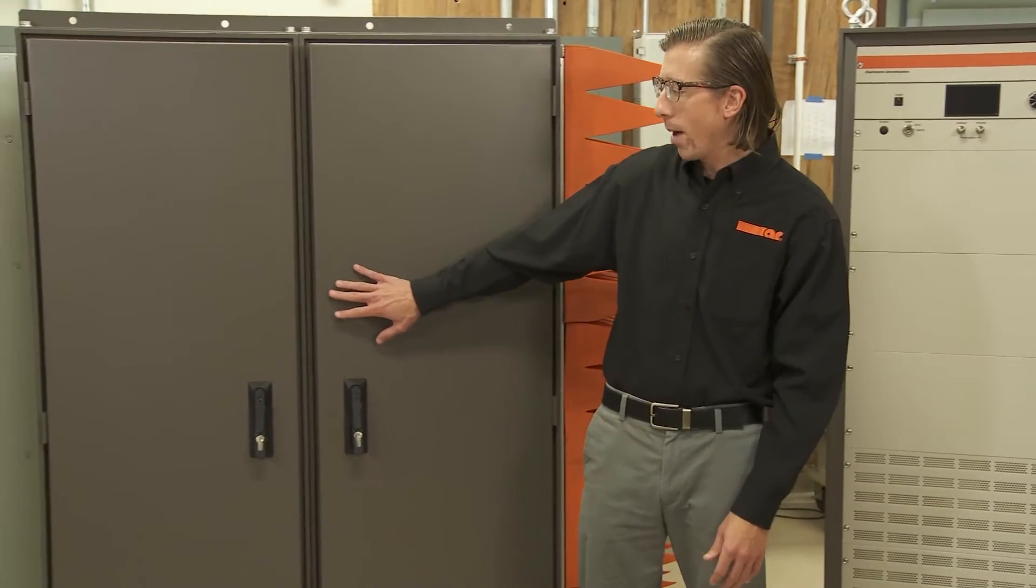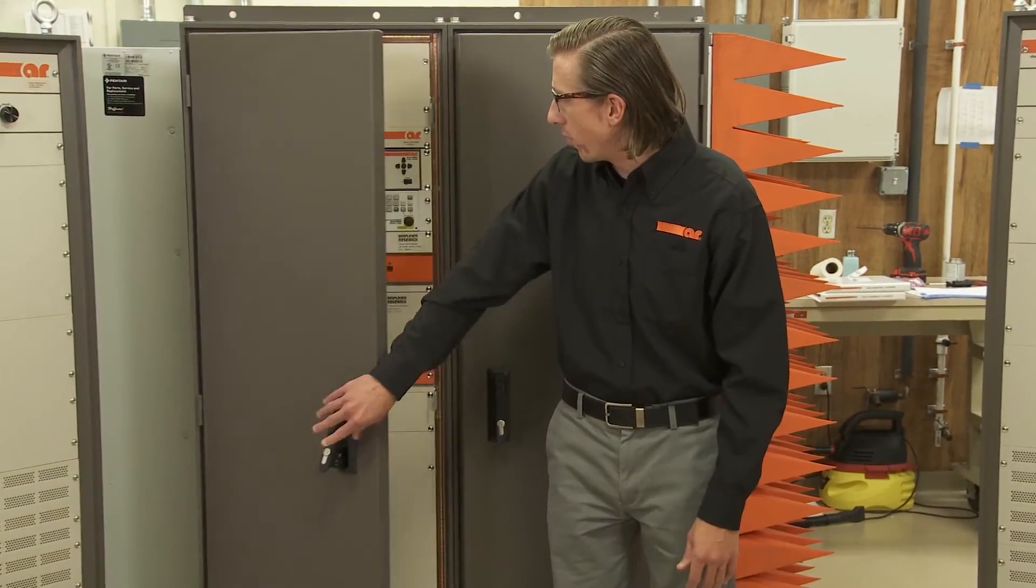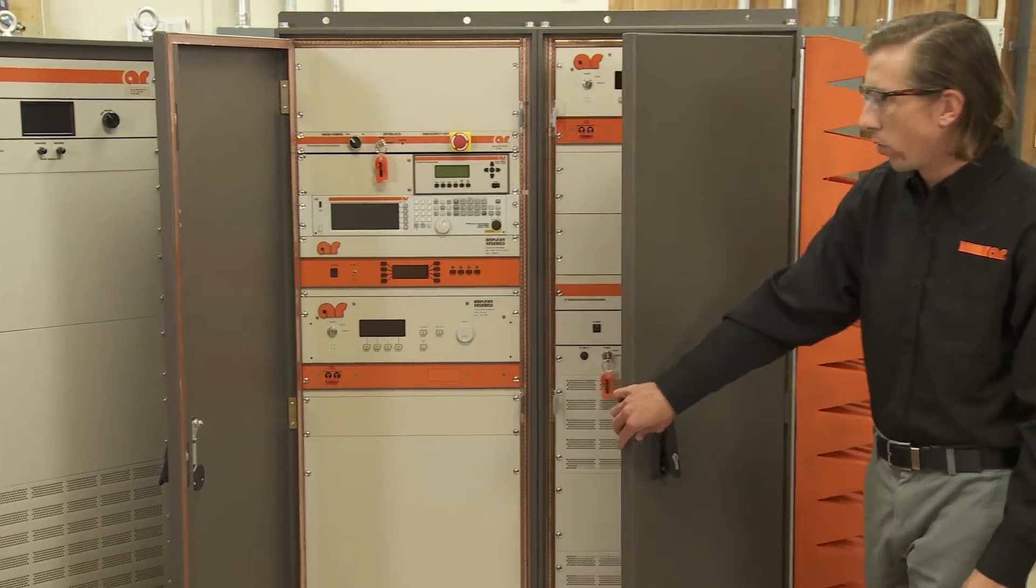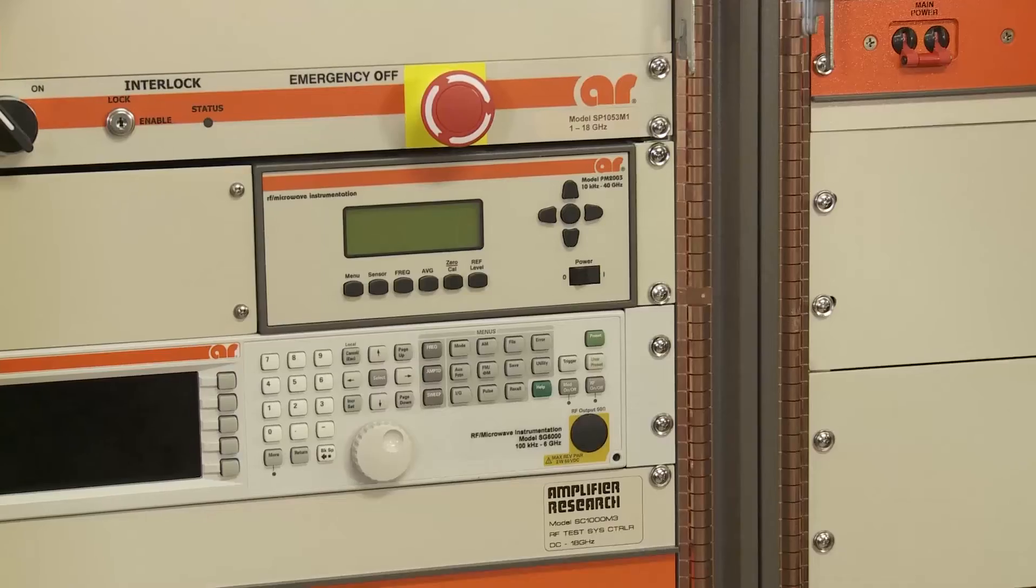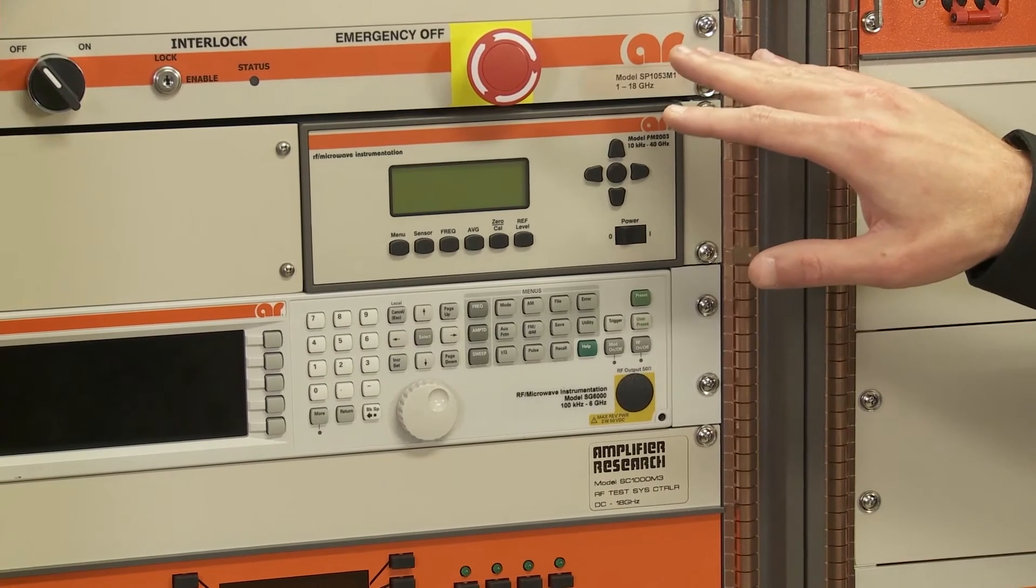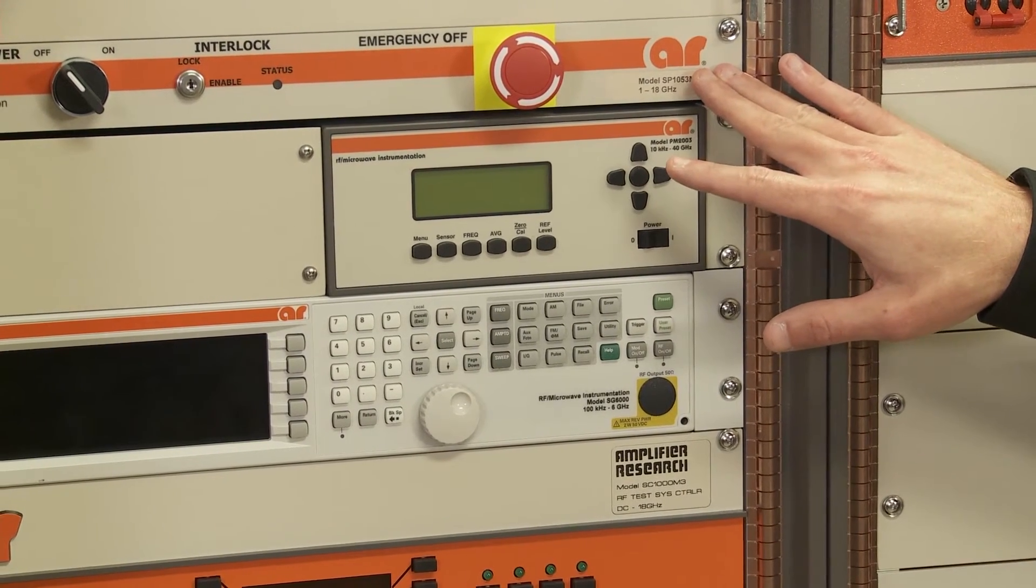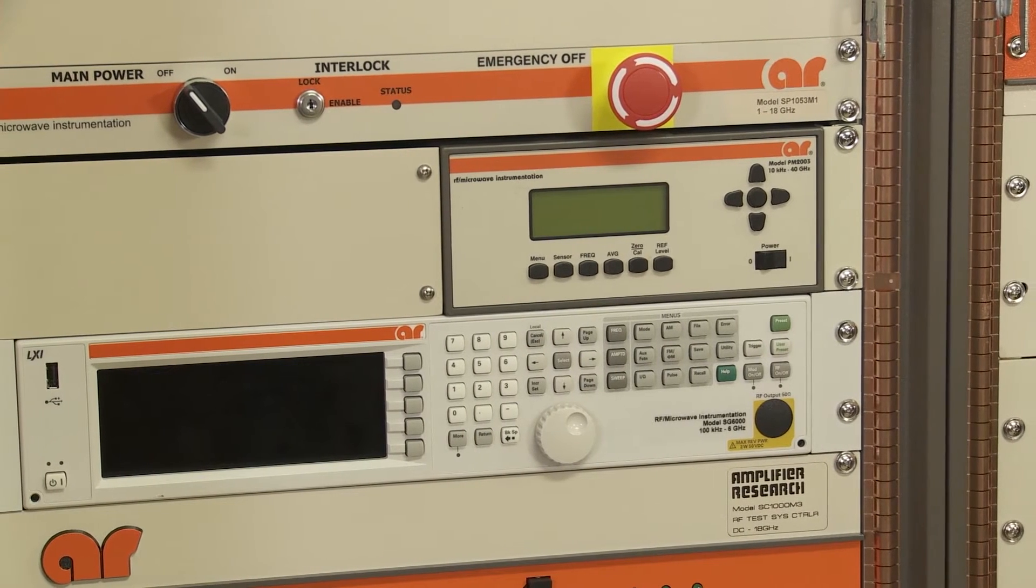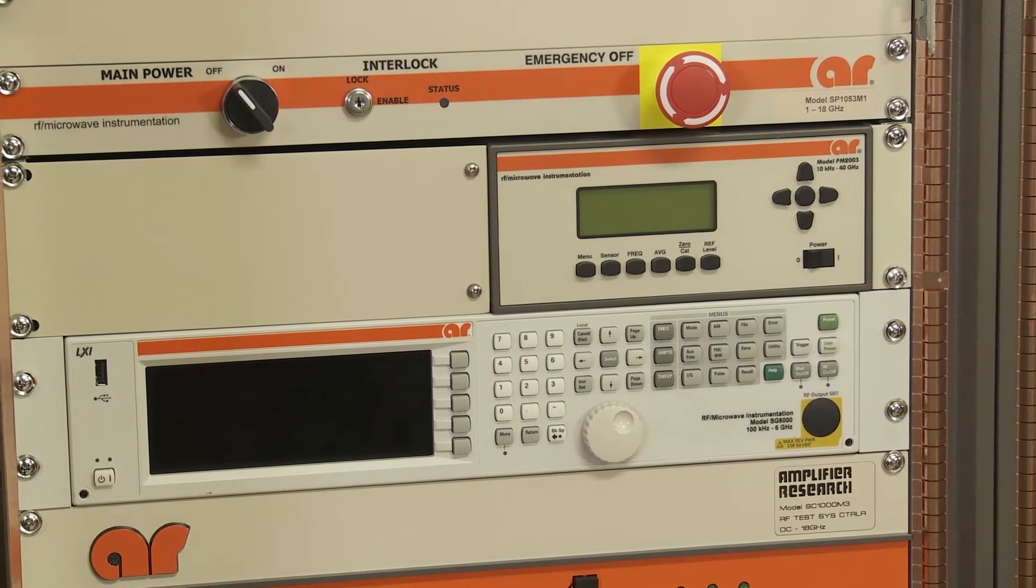Inside this shielded cabinet we have a system designed to span from 1 gigahertz to 18 gigahertz. First we have a system interlock which is connected to a power distribution unit inside the system providing filtered breaker power to all the components within the system.